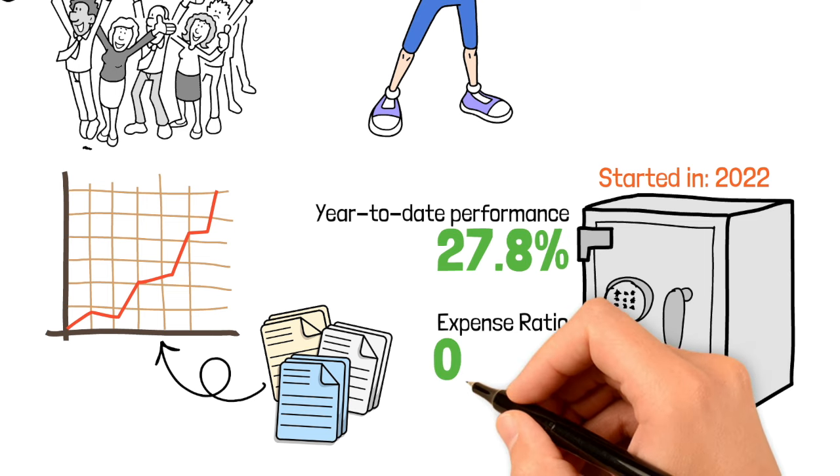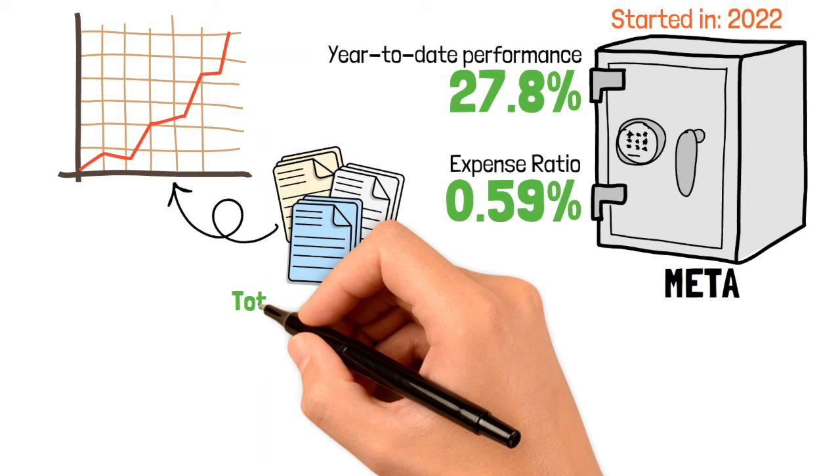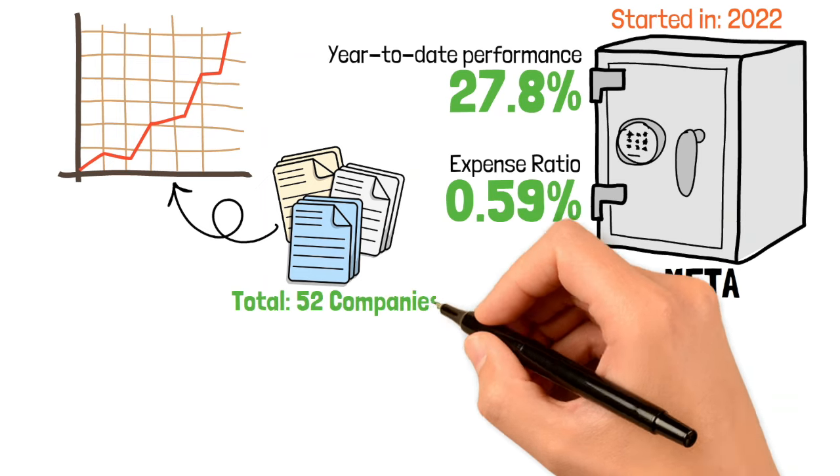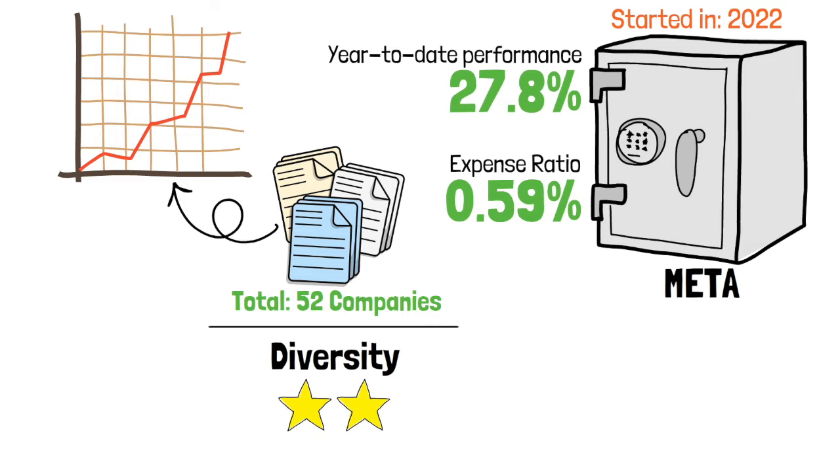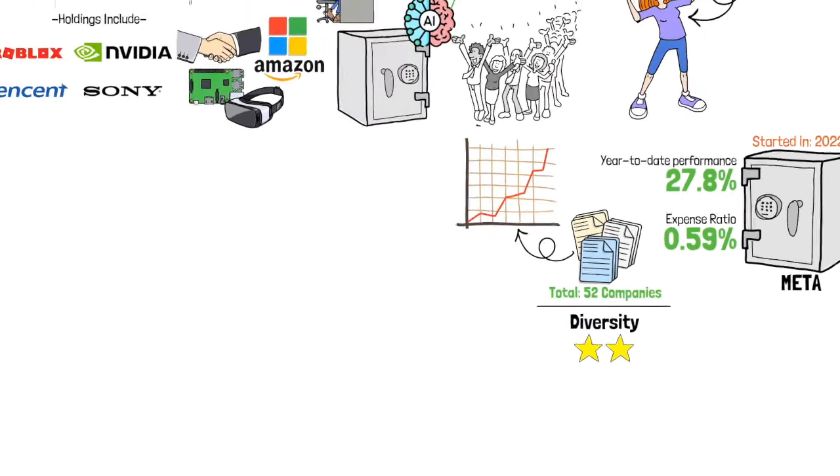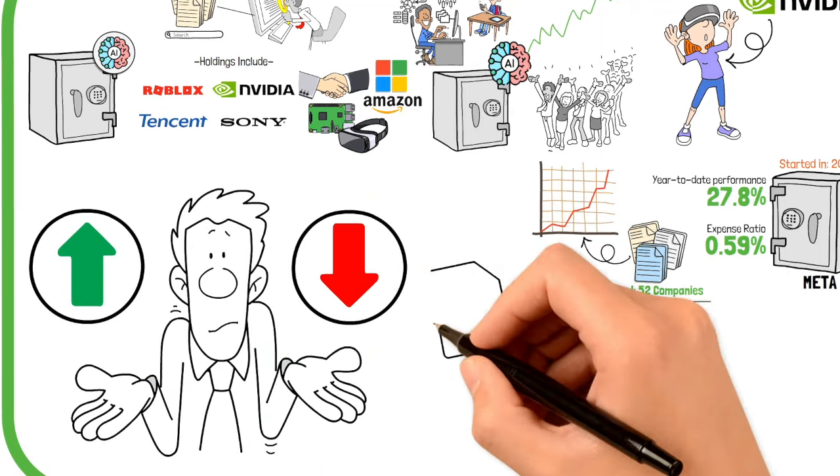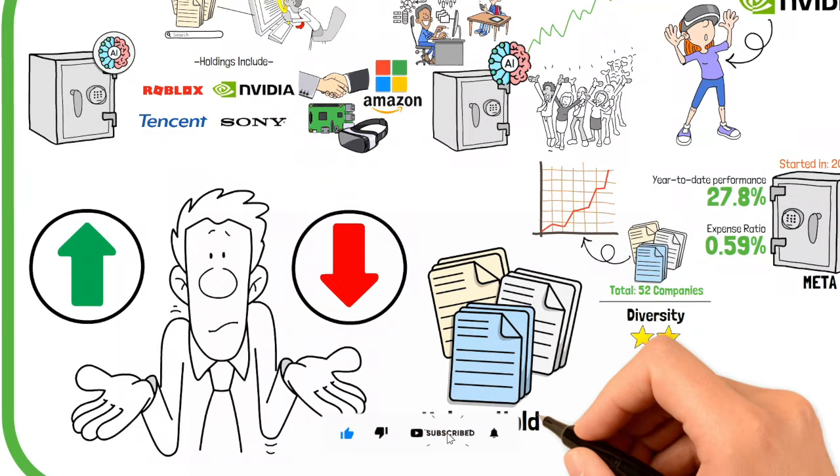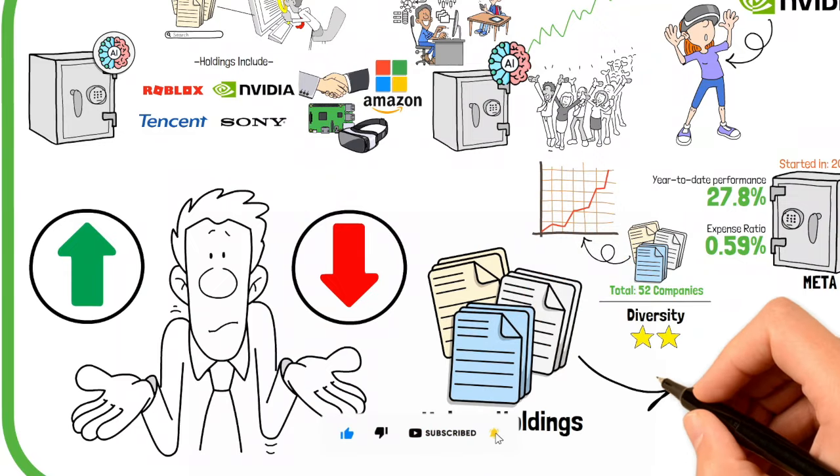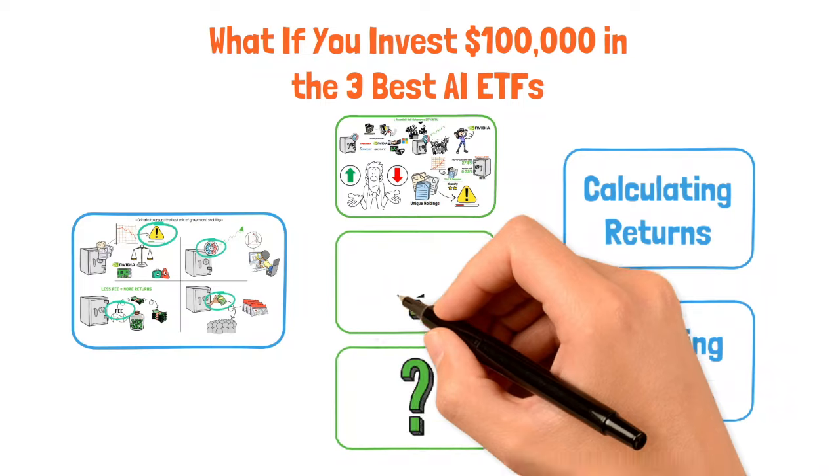META's expense ratio is slightly above average at 0.59%, but this is justified by the unique exposure it offers. The ETF holds 52 companies, which makes it less diverse compared to some others. However, this concentrated approach can be beneficial if the selected companies continue to perform well. While META's focused portfolio can lead to larger swings, both positive and negative, it also offers a unique set of top holdings not found in other tech ETFs. This distinct composition can help mitigate the risk of overlapping with more conventional technology funds.